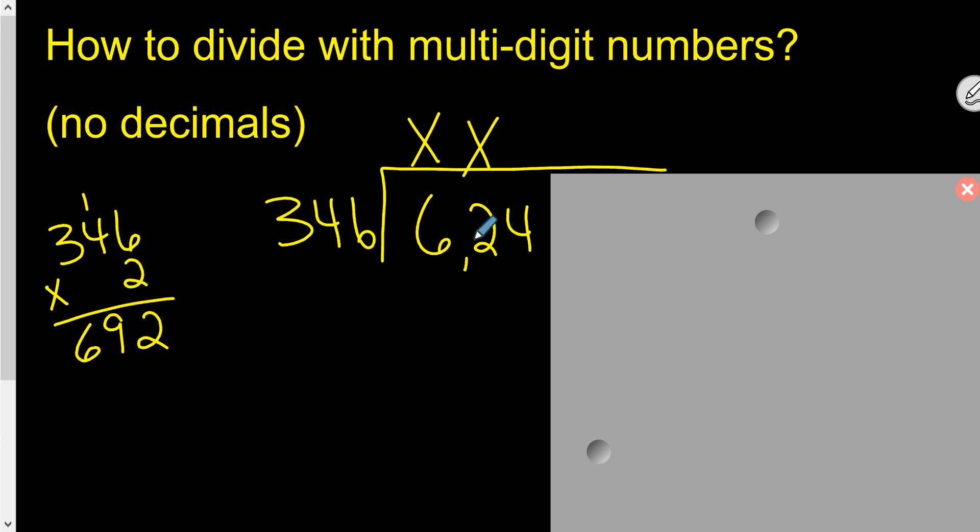692 is bigger than 624, so I know this can't go in twice. So how many times can it go in without going over? Once.